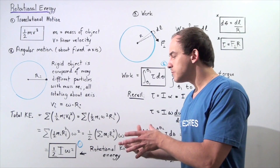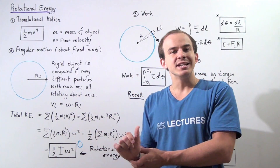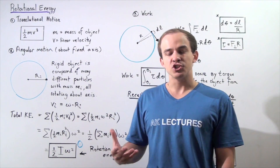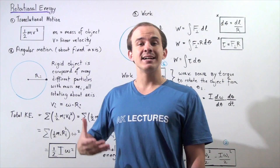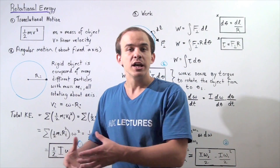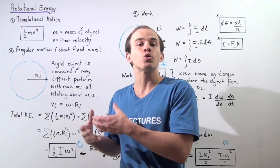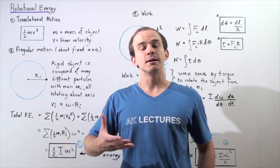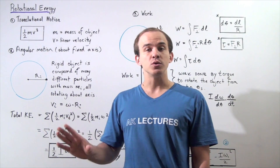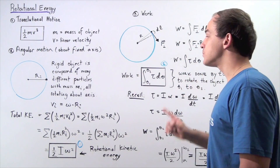When an object is undergoing angular motion, that object experiences a change in rotational kinetic energy — it is gaining kinetic energy. So there must be an energy transfer taking place; energy is inputted into our rotating object by some force. That means work must be done on our rotating object. The question is: how much work is done?